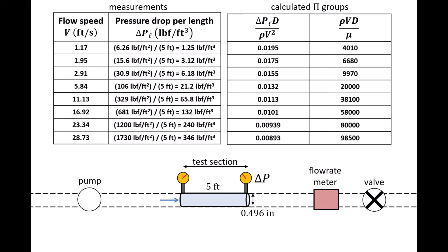We now can calculate the value of the two pi groups at each flow speed. When the flow speed is 1.17 feet per second, the first pi group is 0.0195 and the Reynolds number is 4010. When the flow speed is 28.73 feet per second, the first pi group is 0.00893 and the Reynolds number is 98,500. Notice that the lowest value of the Reynolds number is above 4000, so the flow in the pipe should be turbulent for all the flow speeds examined.